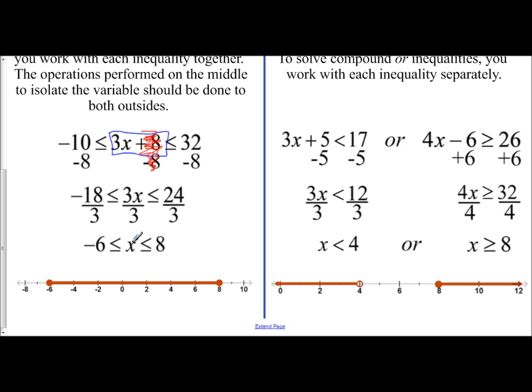Your x is between negative 6 and 8. And so your shaded region on the number line is going to be between negative 6 and 8. And so that's an example of an and compound inequality.